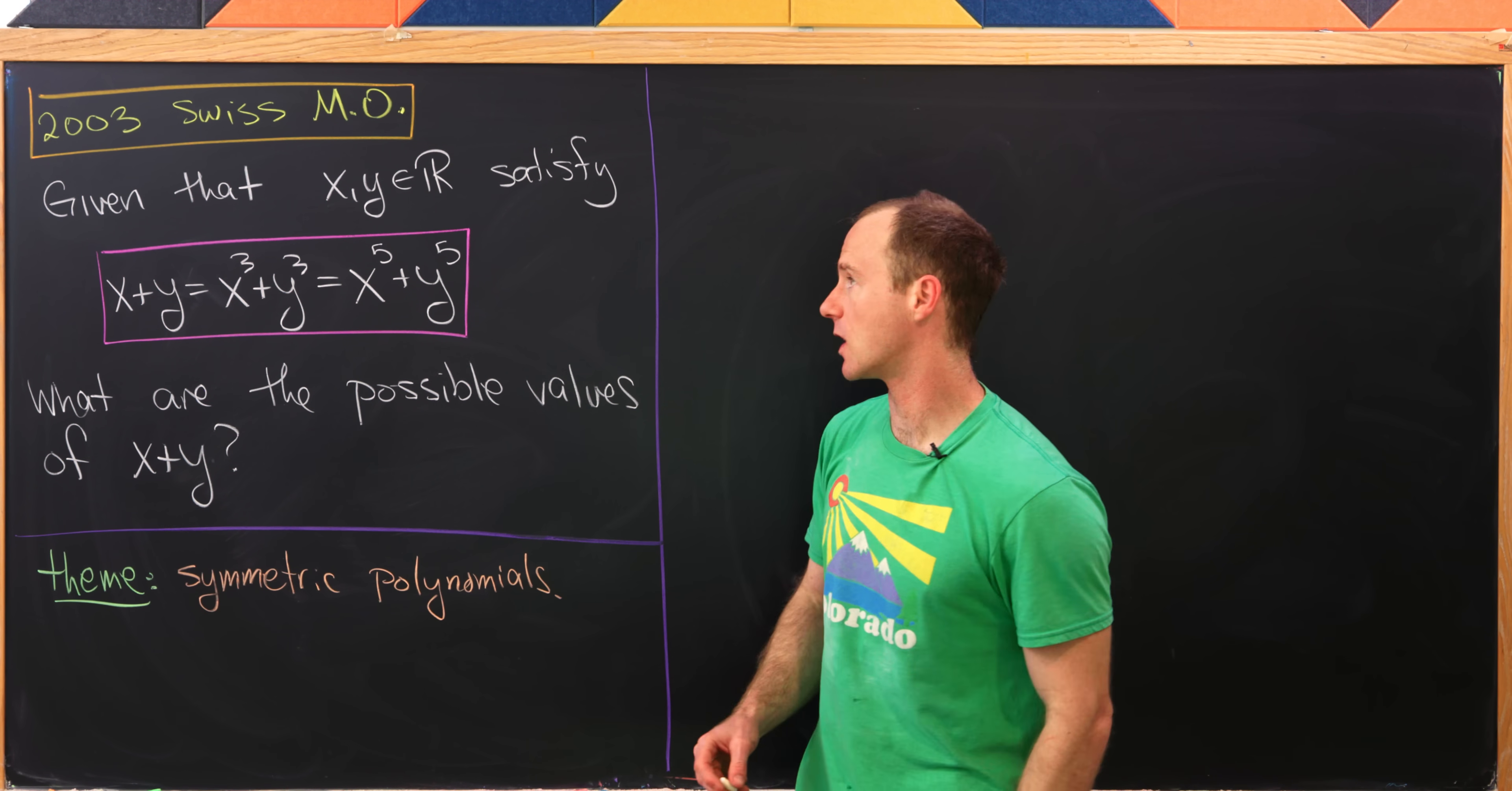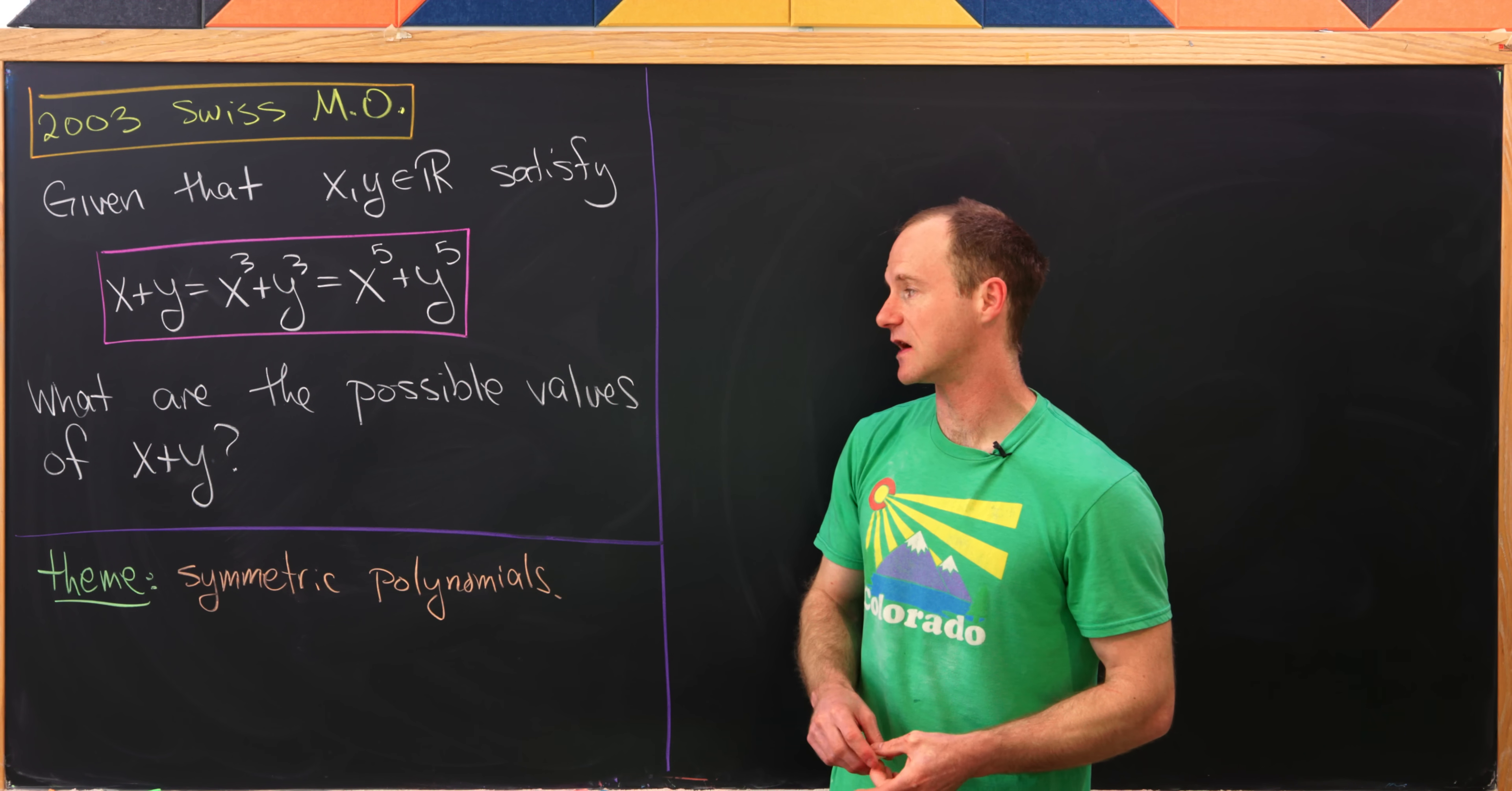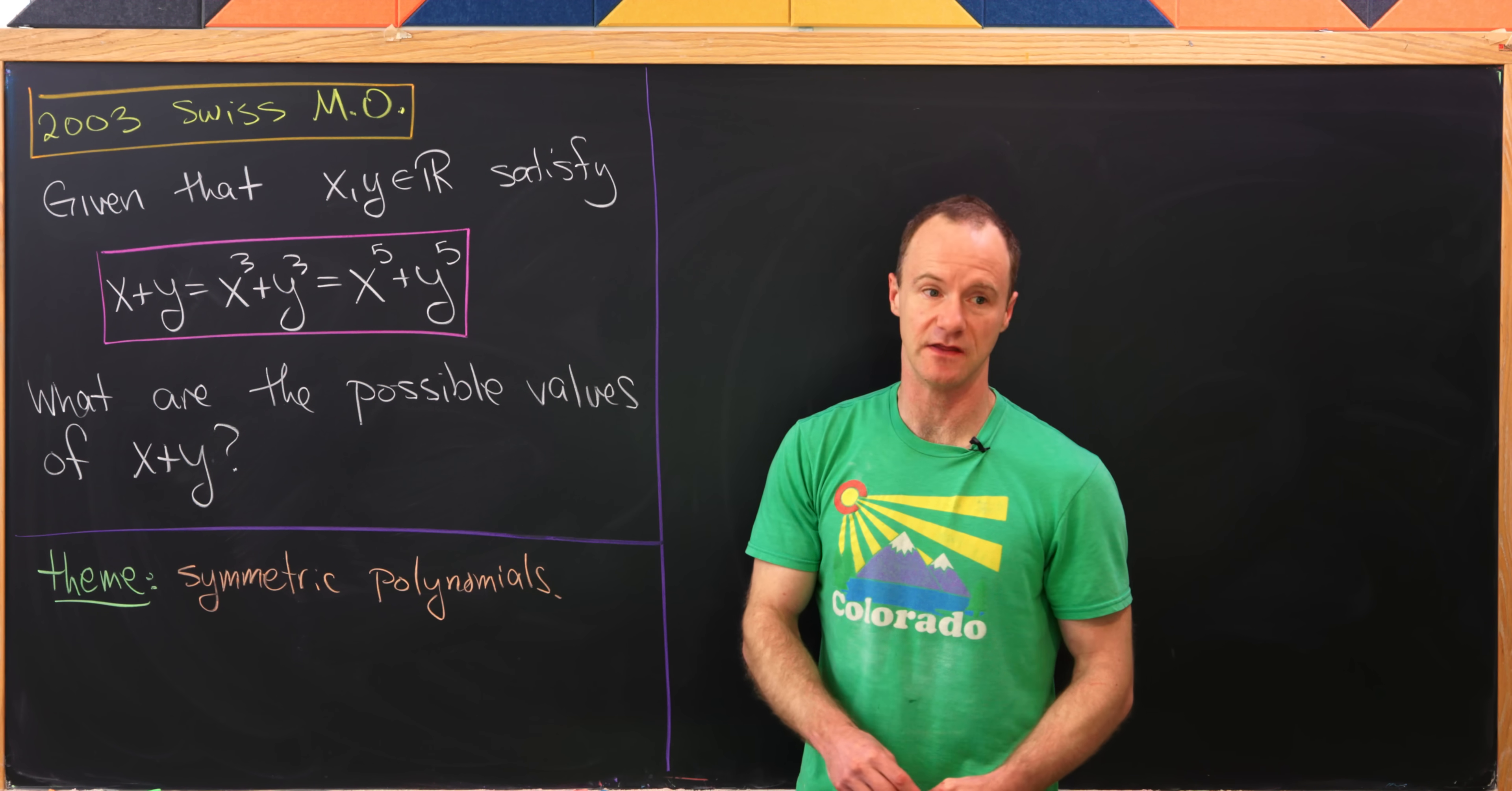Let's look at our problem. Given that we have x and y which are real numbers, satisfying x plus y equals x cubed plus y cubed equals x to the fifth plus y to the fifth, what are the possible values of x plus y? I would say a little sub-theme of this would be odd polynomials, because all of these are odd in their variables.